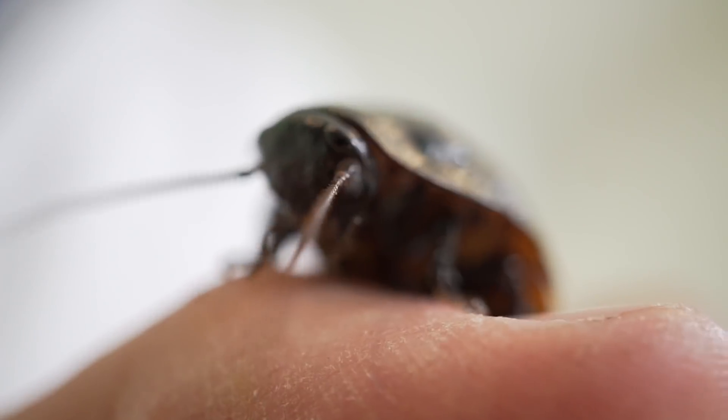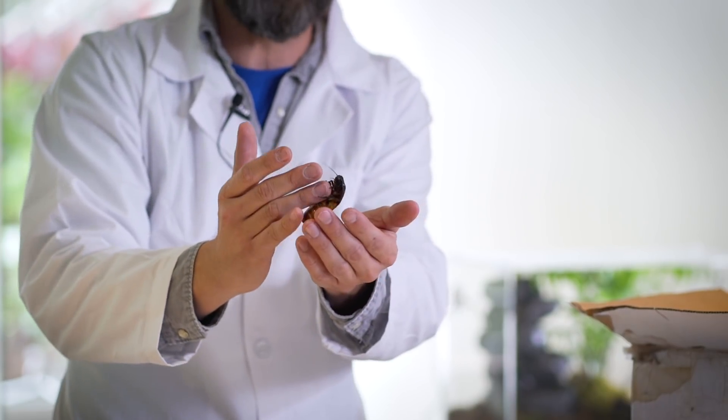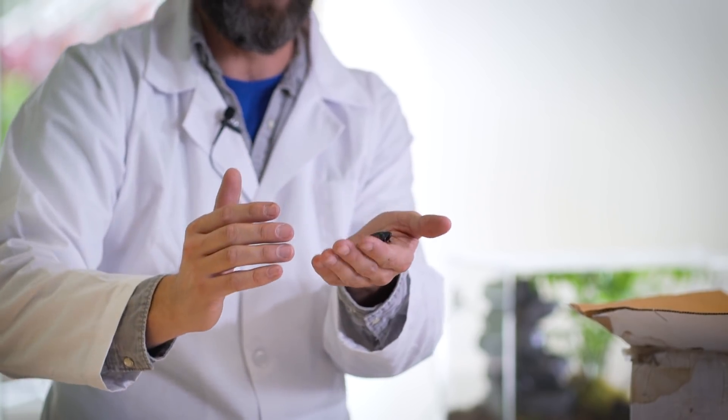The worst they can do is they have these spiny little legs and sometimes they'll give you a little kick like a spur of a cowboy. Look at this. They've got little hooks for feet. They can grab right onto you like that. That's so cool.